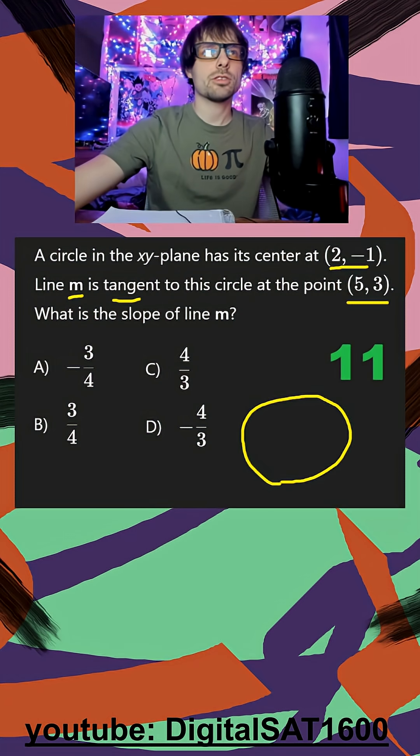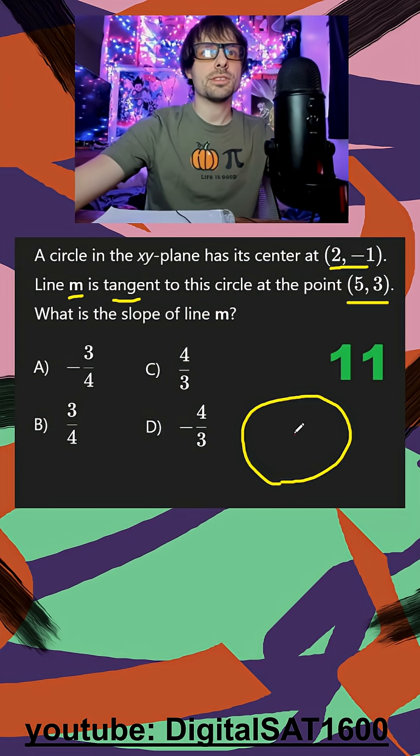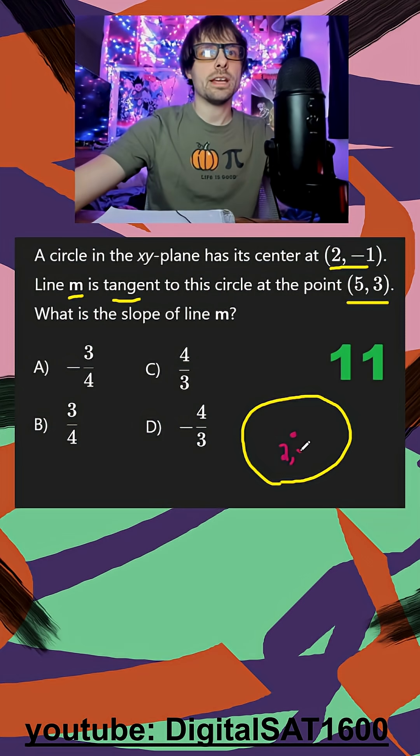So it's going to be easier to see if I draw my circle, and we give it center 2, negative 1.